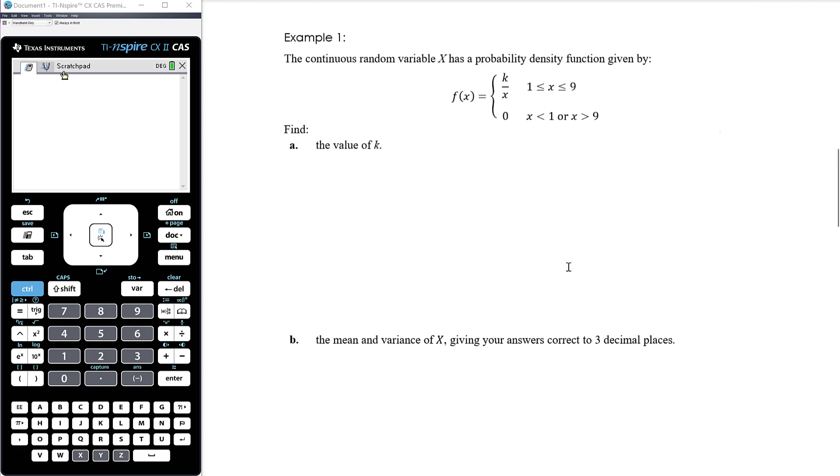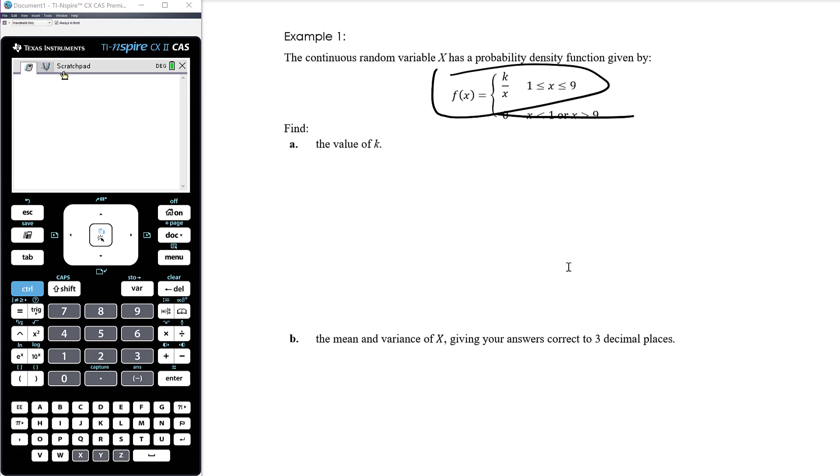OK, let's just look at some examples. Continuous random variable x has a probability density function given by this piecewise function. So again, it's not really a piecewise function. It's essentially just that because it's zero everywhere else. So that's how you can think about it. We want to find the value of K. So if it's a probability density function, we know that the total area has to be one. So we're going to use that fact to find K. So we know that if we integrate over the domain, which is one to nine, the probability density function, it should equal one. And we can use that to find K.